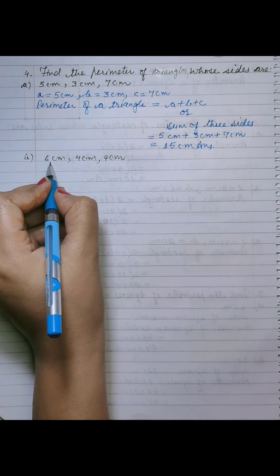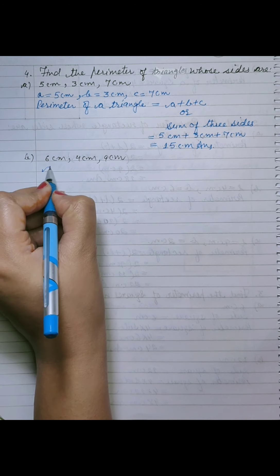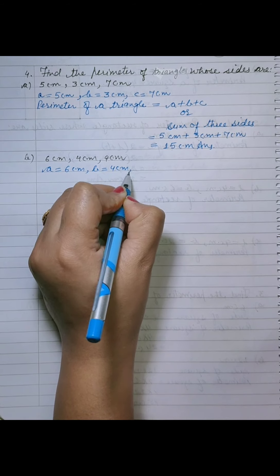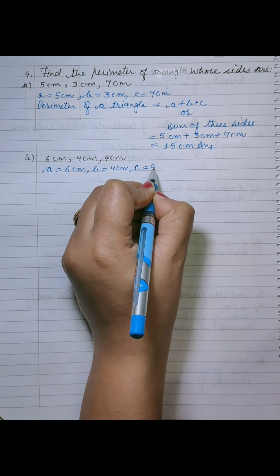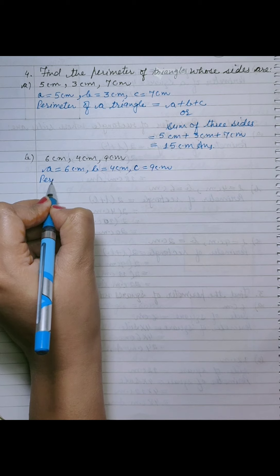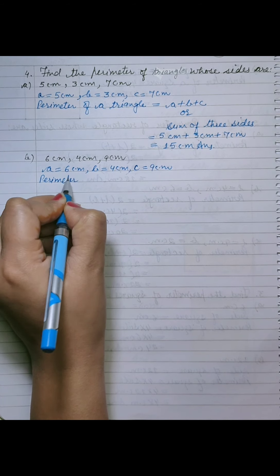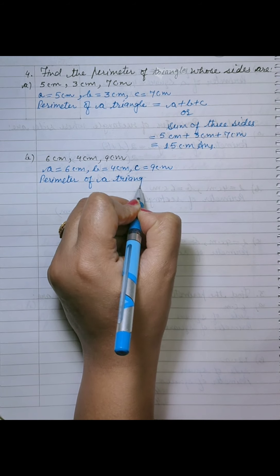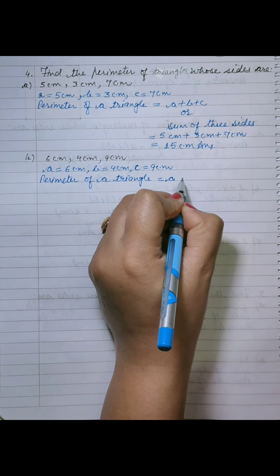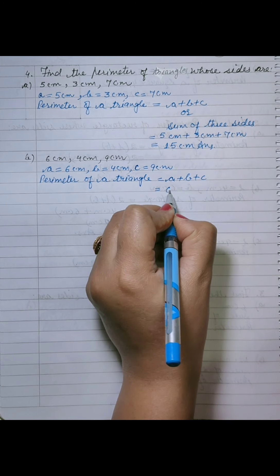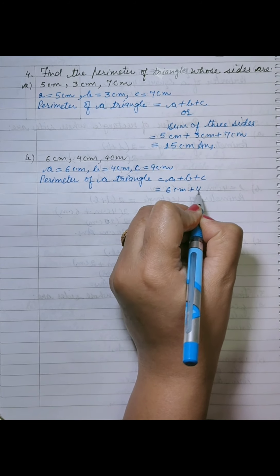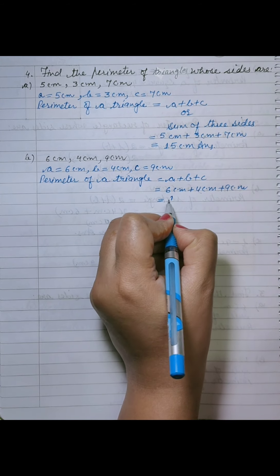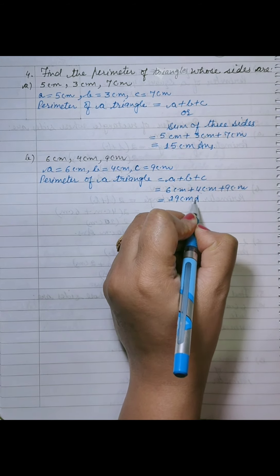Next is part b 6 centimetre, 4 centimetre and 9 centimetre. A is equal to 6 centimetre, b is equal to 4 centimetre, c is equal to 9 centimetre and perimeter, perimeter of a triangle, a plus b plus c. So, 6 centimetre plus 4 centimetre plus 9 centimetre, it is equal to 19 centimetre. Right?